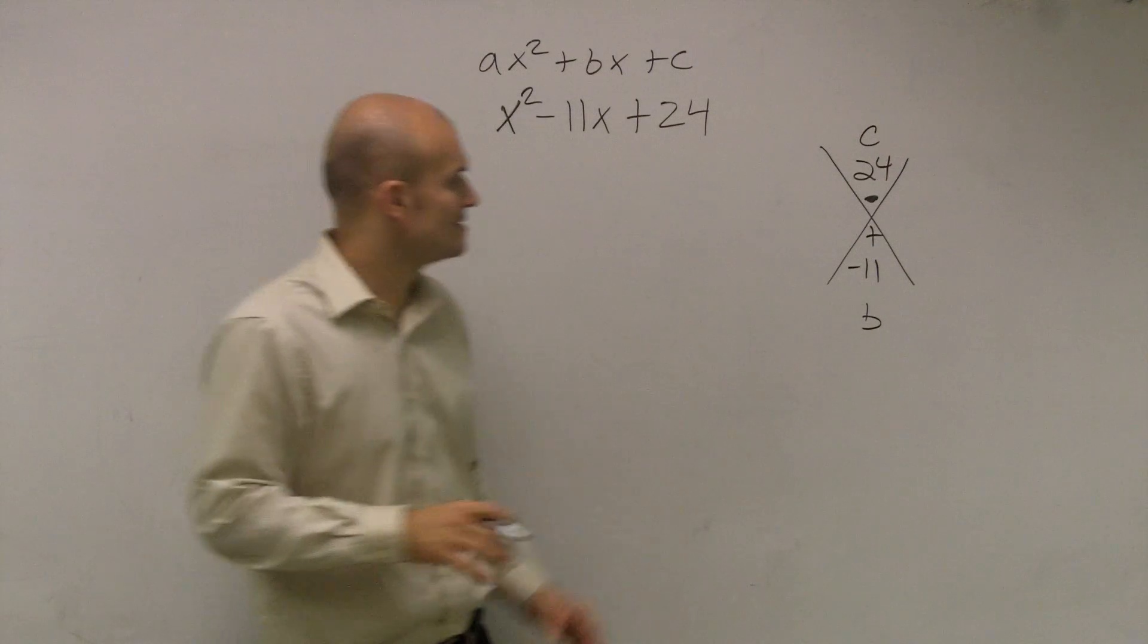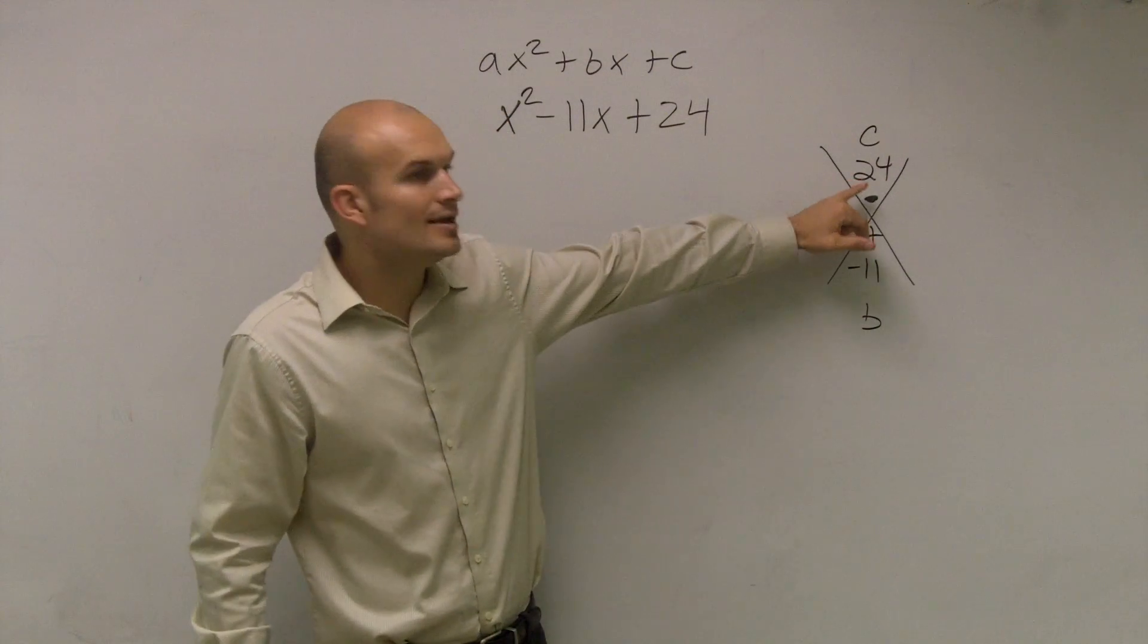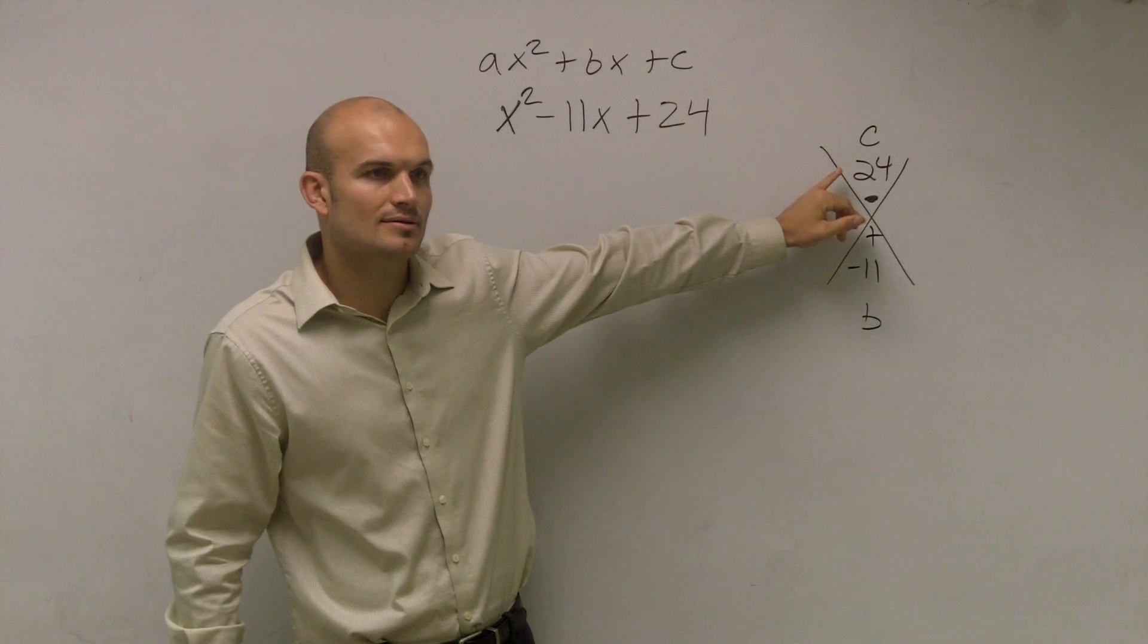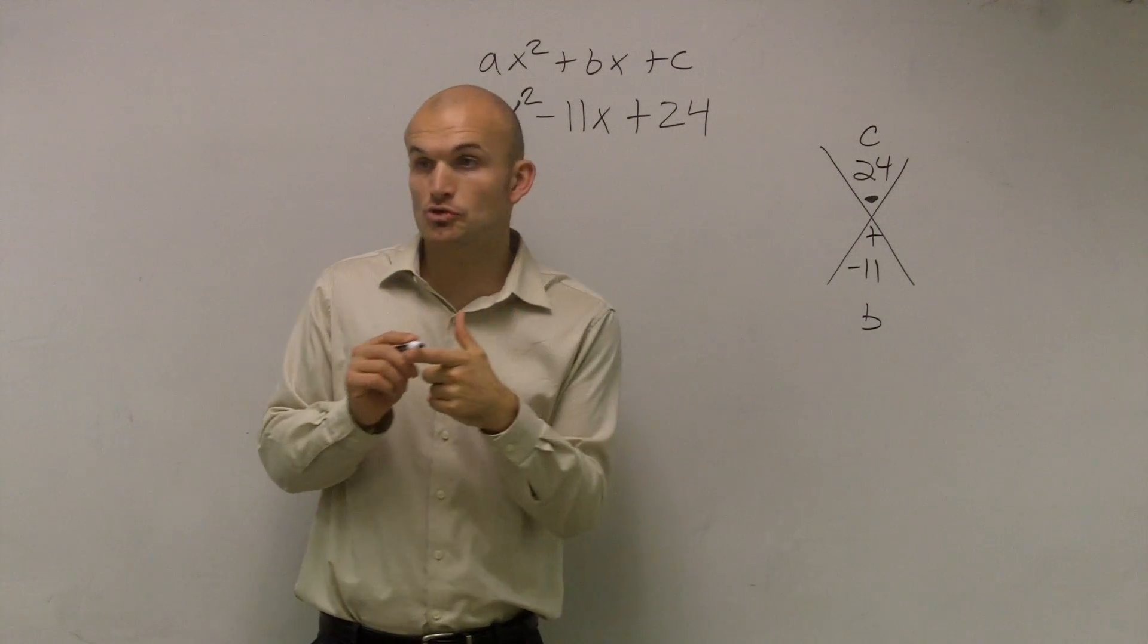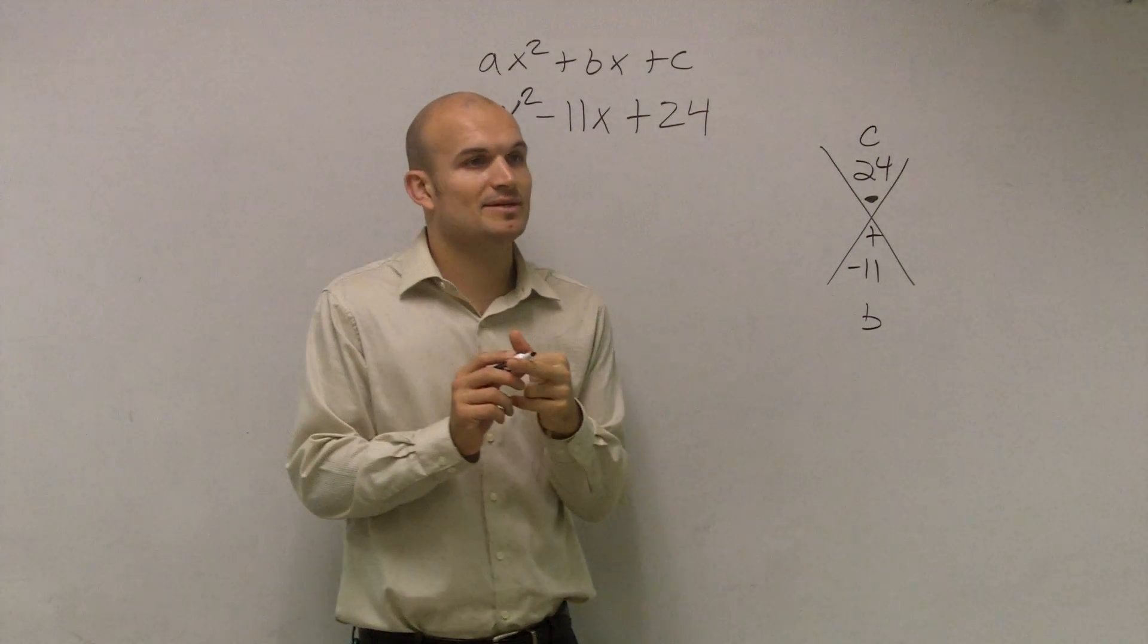Now, there's a little trick with this, and the trick is, if my two numbers are multiplying, that means they either have to be two positive numbers, or they have to be two negative numbers.